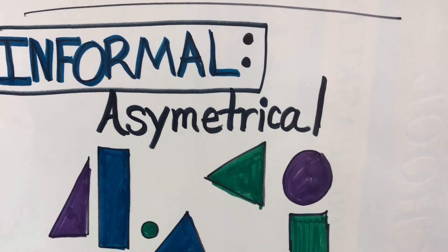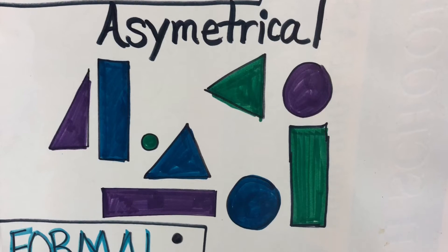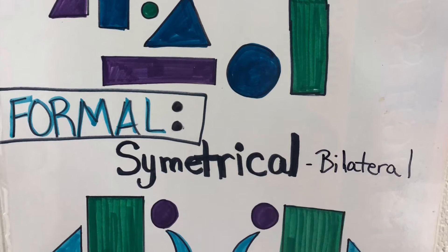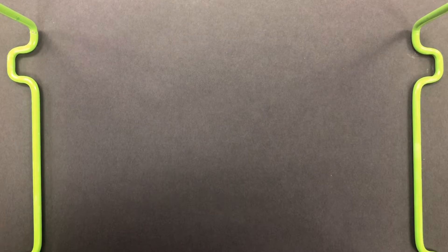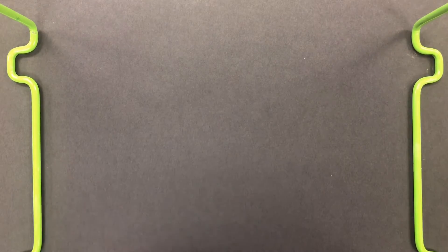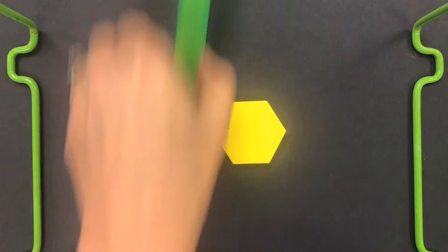Anytime artists talk about balance in their artwork, they're talking about distributing the visual weight of the items in their art. For example, you can have symmetrical art that is balanced on both sides where each part is equal.